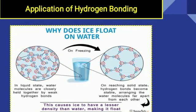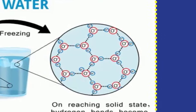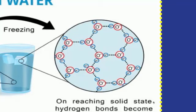Jab water ice mein convert hota hai to water ke molecules aapas mein judke hexagonal structures banate hain, jinko hexagonal rings kaha jata hai. Each red circle represents an oxygen atom, aur us red circle ke around do blue color mein small bubbles nazar aa rahe hain, yeh hydrogen hai. To water ka ek molecule consists of one oxygen atom and two hydrogen atoms. Temperature down hone par water ke molecules hydrogen bonding ke through — dotted black lines jo dikhti hain yeh hydrogen bonding ko show karti hain — aapas milke six-edged hexagonal ring structure banate hain.